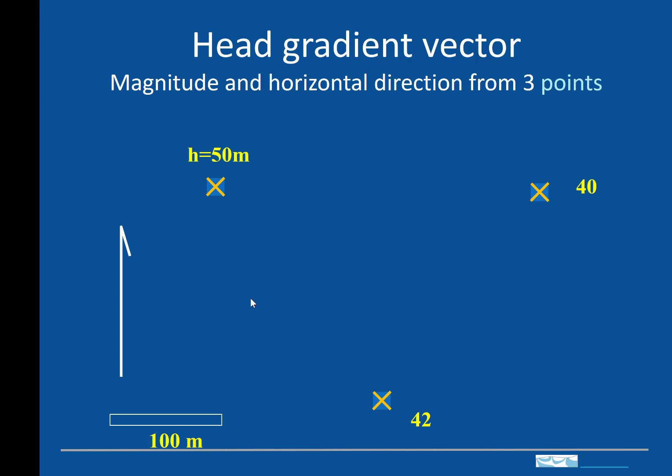So what we'll start off with is a map where we've got these three points located in space, and we have a scale and a north arrow. And at each of these three locations, we've got a value, in this case, of hydraulic head.